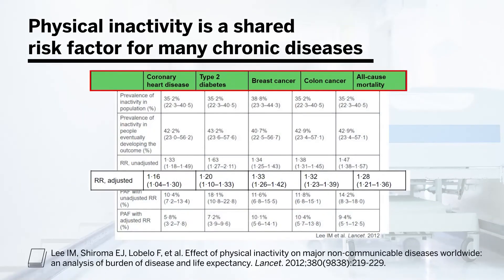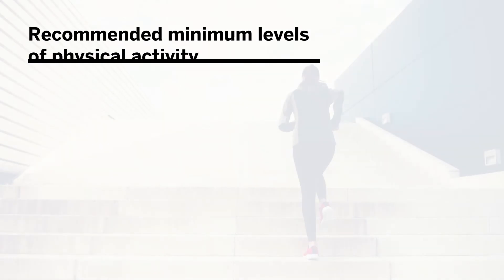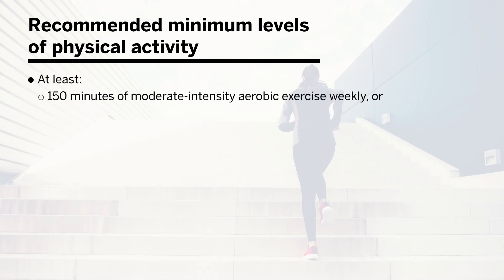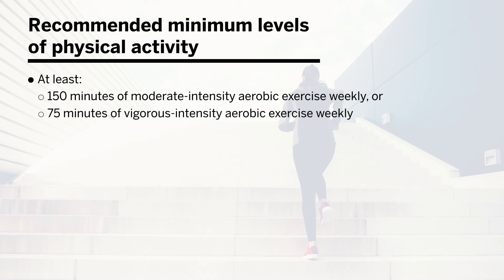Physical activity is a shared risk factor for many chronic diseases. Across coronary disease, type 2 diabetes, breast cancer, colon cancer, and all-cause mortality, inadequate physical activity is a shared risk factor. Recommendations for the minimum amount of physical activity include at least 150 minutes of moderate-intensity aerobic exercise weekly or 75 minutes of vigorous-intensity aerobic exercise weekly.